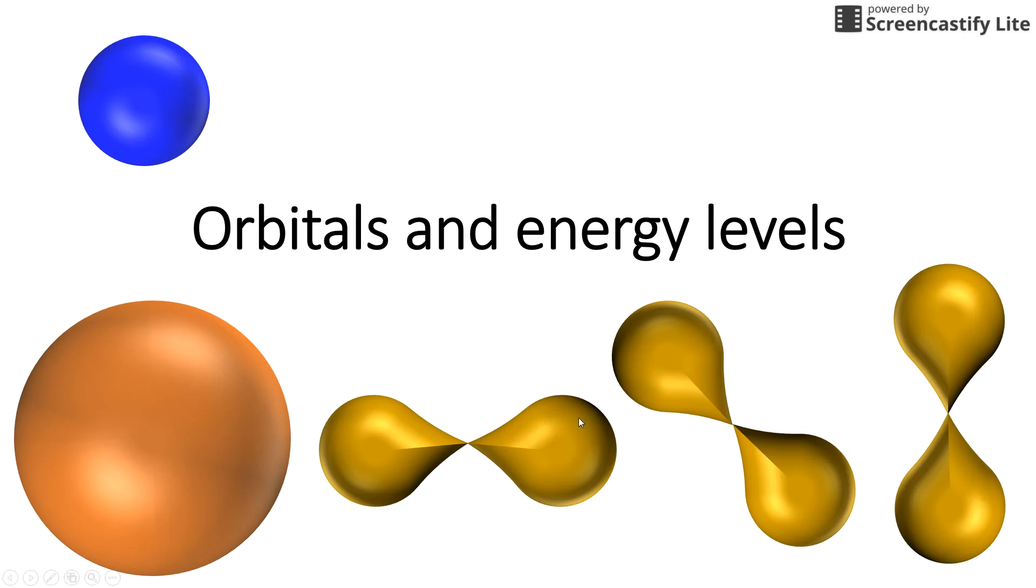Then you have P orbitals, which are like a double teardrop. They can also reach the nucleus as well as extend to the peripheries. We have three P orbitals. Then you also get the D and F orbitals.